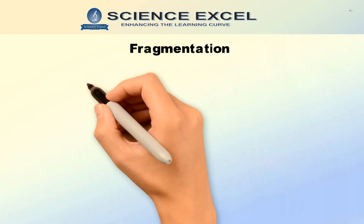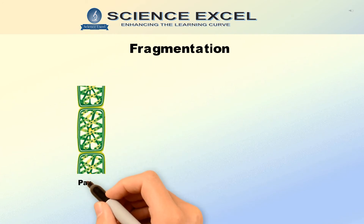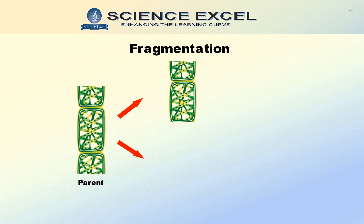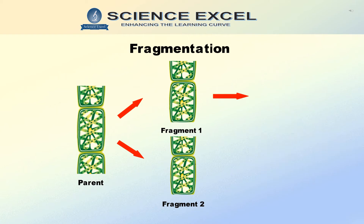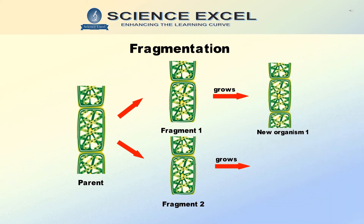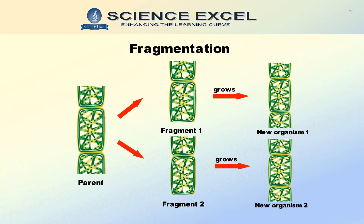In fragmentation, the body of the parent organism breaks up into many small fragments. Each fragment grows and develops into a mature organism. Typical examples are spirogyra and sponges like psychin.